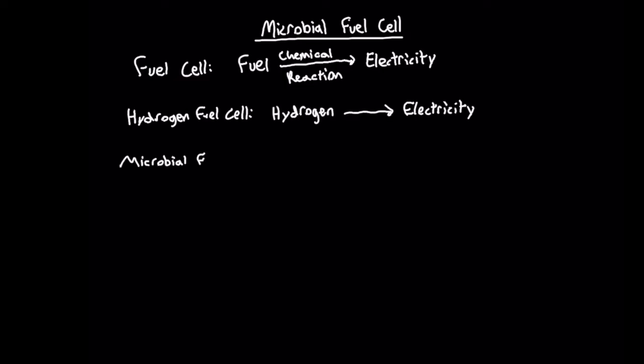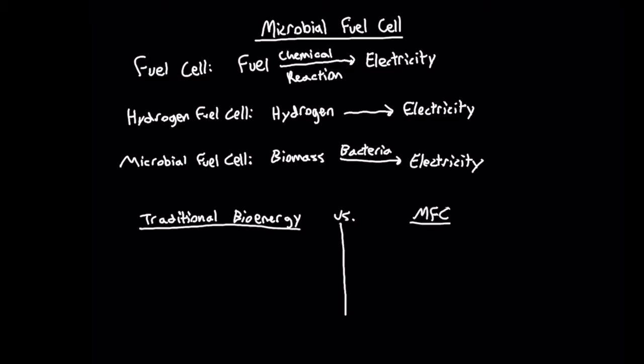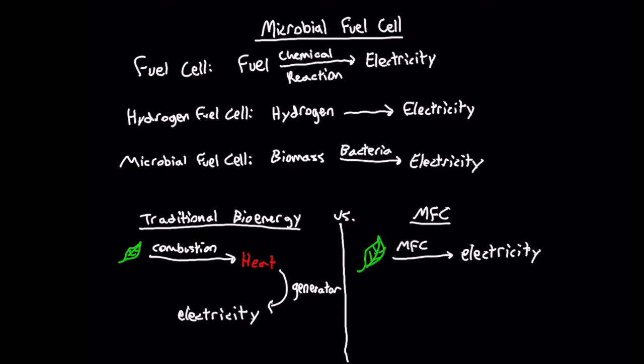The microbial fuel cell uses biomass, such as sugars, to produce electricity using bacteria. Whereas traditional biomass energy comes from burning the biomass to make heat, which is then used to produce electricity, microbial fuel cells can convert biomass directly to electricity.